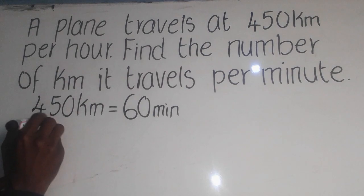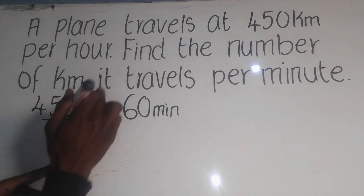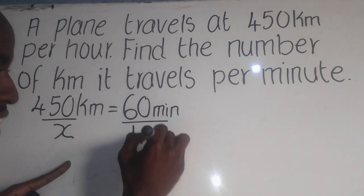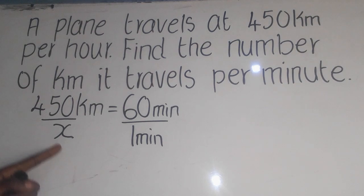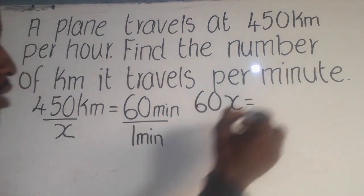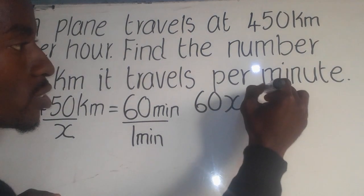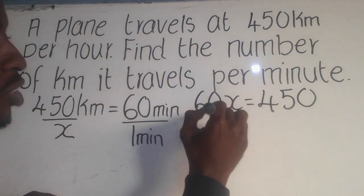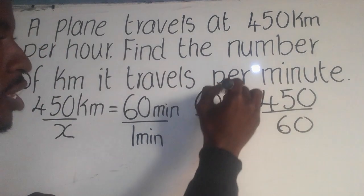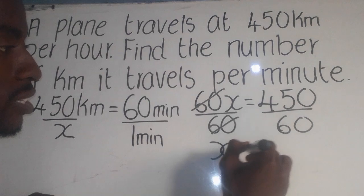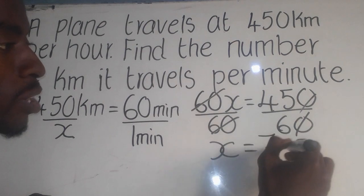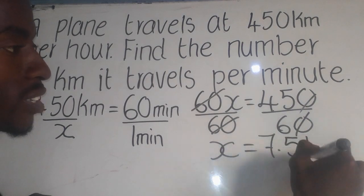Find the number of kilometers — meaning this side, we don't know. When it travels per minute, you say 1 minute there. We need to cross-multiply. So x times 60 gives 60x. And 450 times 1 gives 450. You divide both sides by 60, cancel out x. So x equals 450 divided by 60, which gives 7.5 kilometers.